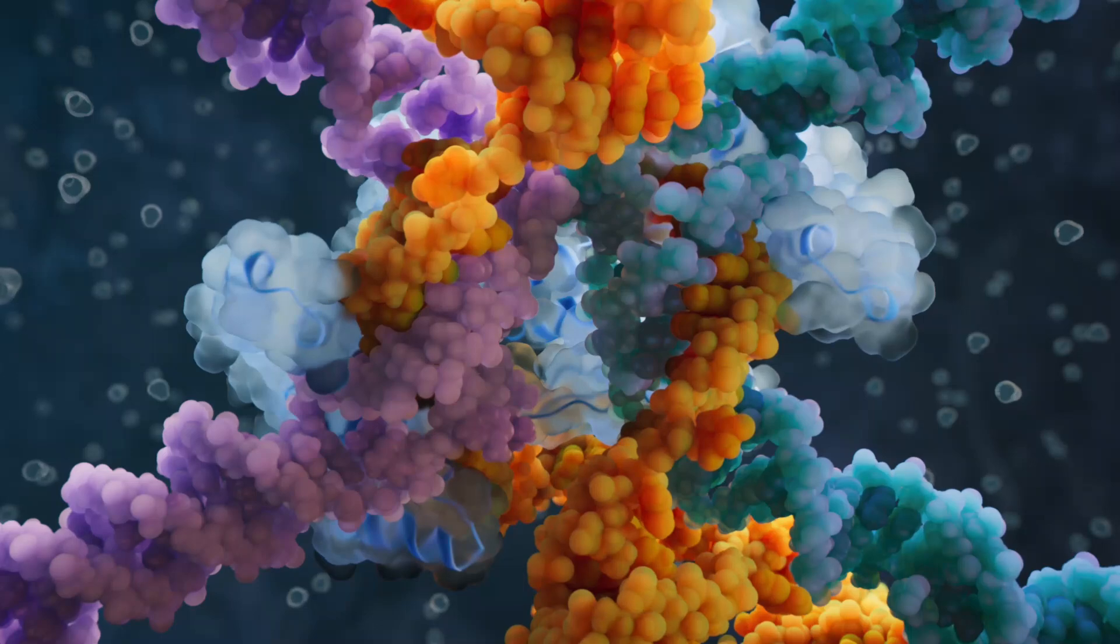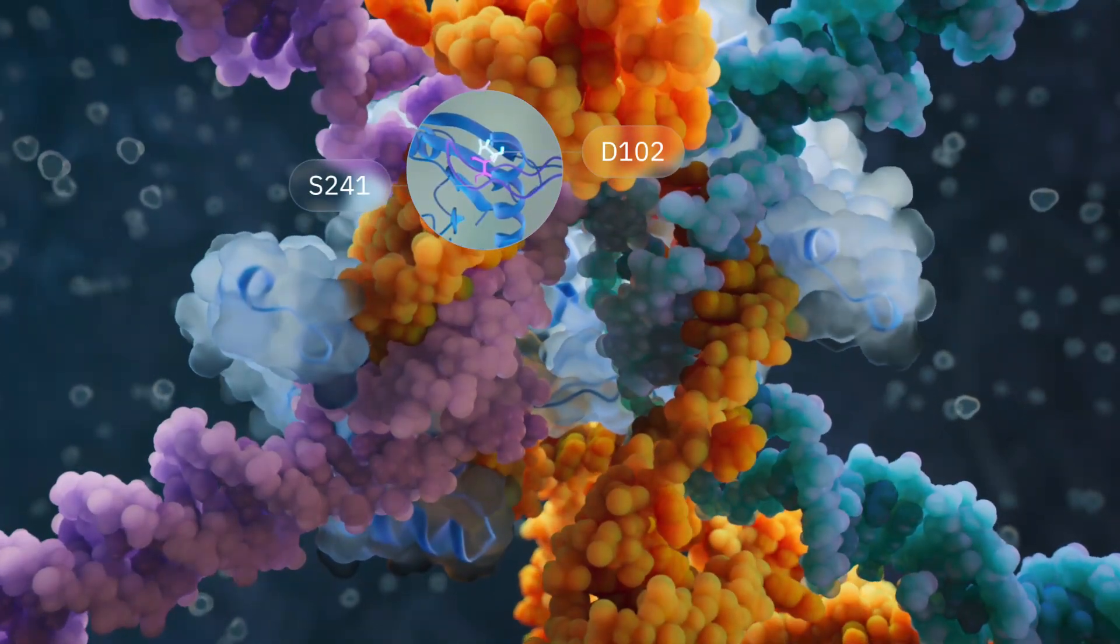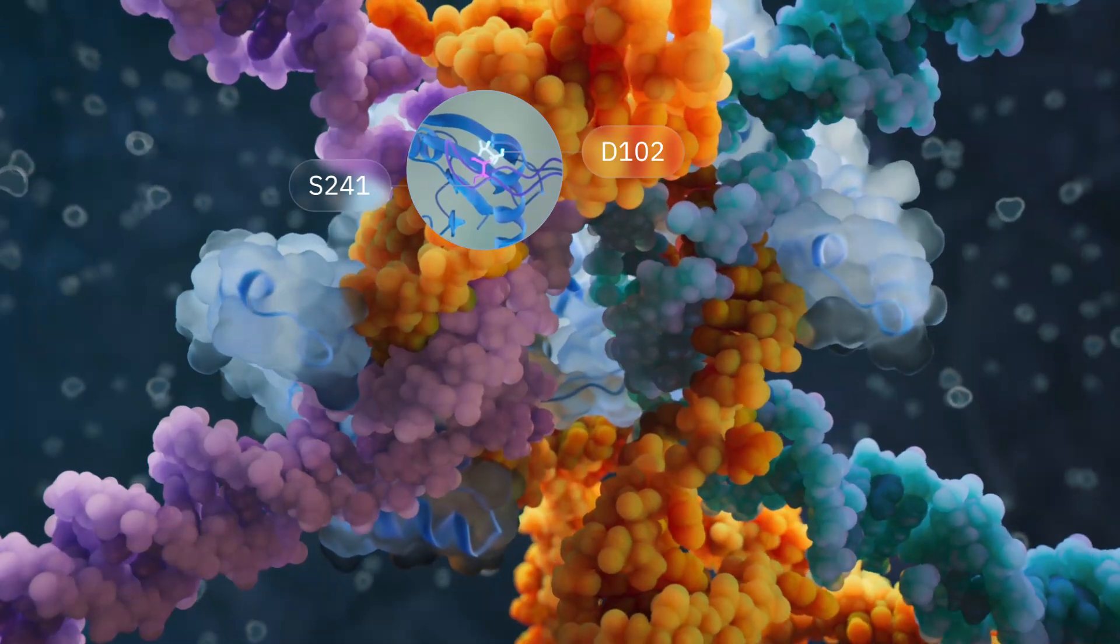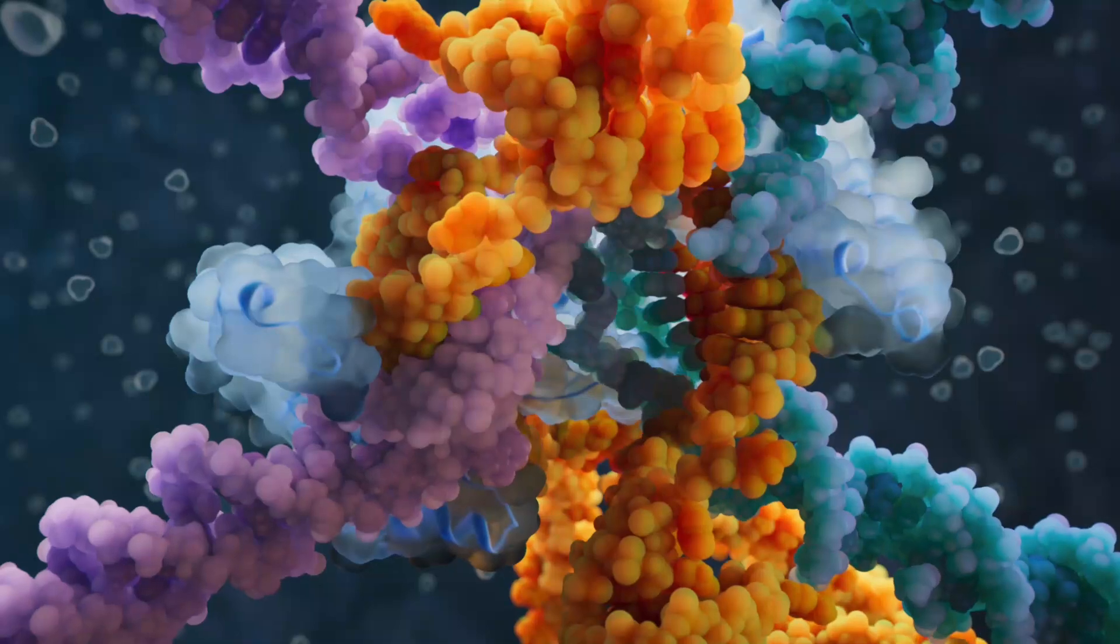Once bound to both DNA substrates, the recombinase forms composite active sites to swap the top strands between the two DNA molecules. Following strand exchange, the DNA forms a holiday junction-like intermediate.